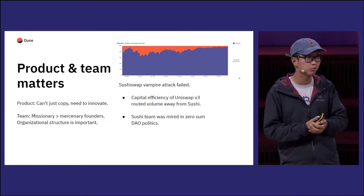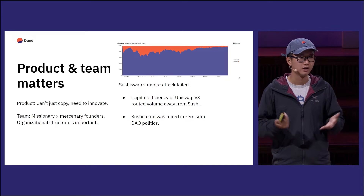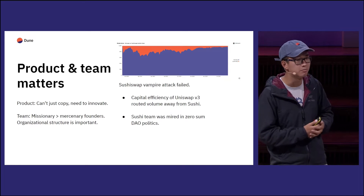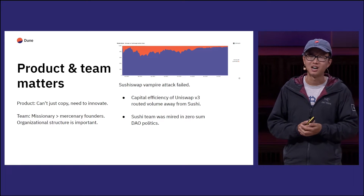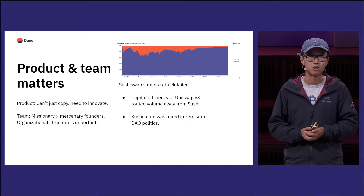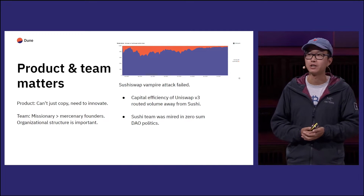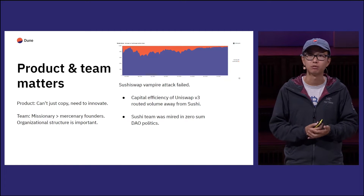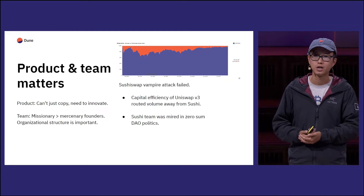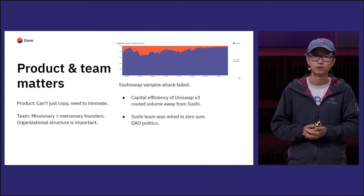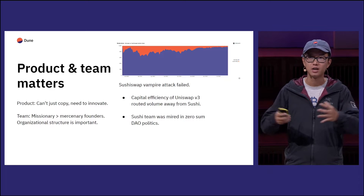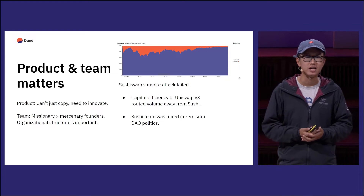The last pitfall is more VC 101: product and team matter. The example I'm using is SushiSwap. Long term, you still need to innovate on product — you can't just copy what's working and add a token to it and expect that to work long term. This really hurt Sushi when Uniswap launched V3, which was much more capital efficient, so liquidity and order flow got aggregated and routed away from Sushi to Uniswap. Sushi tried to copy that with Trident — basically Uni V3, Balancer, and Curve all packaged together — but team and execution matters.